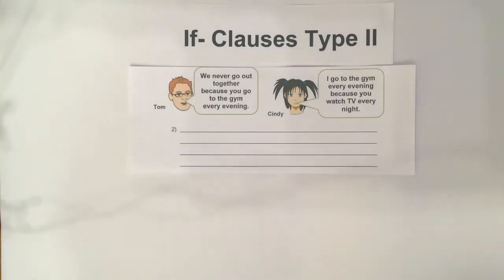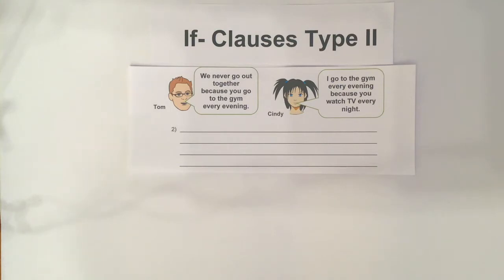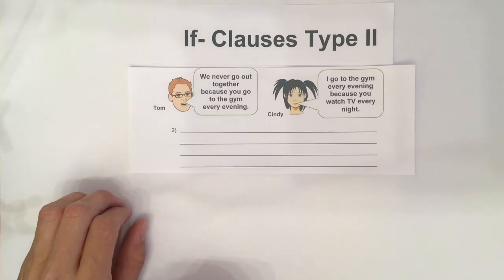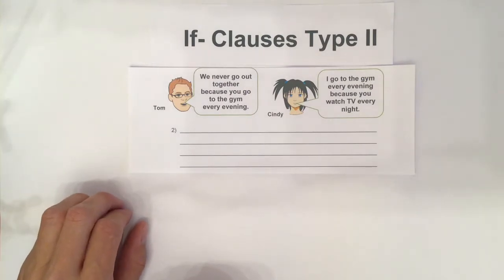Tom and Cindy have a big problem. Tom complains: 'We never go out together because you go to the gym every evening.' And Cindy answers: 'I go to the gym every evening because you watch TV every night.' So if Cindy didn't go to the gym every evening, they would go out together.